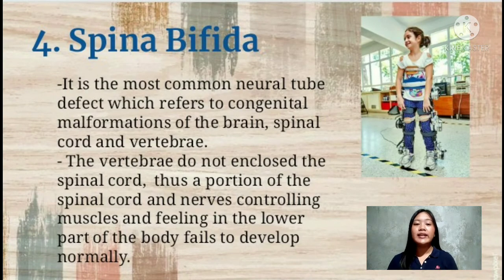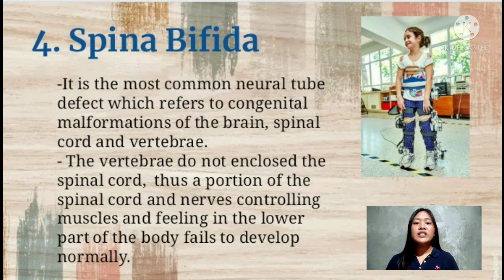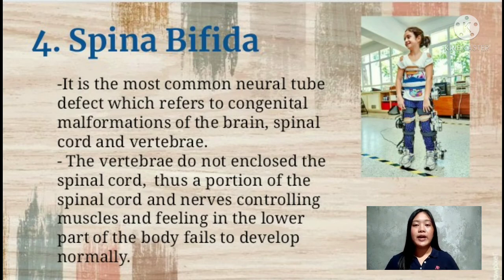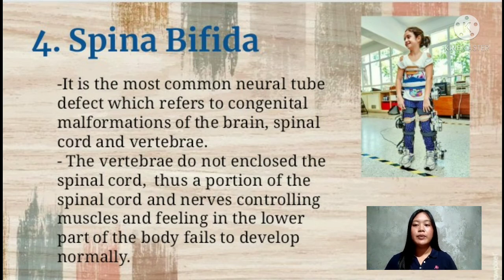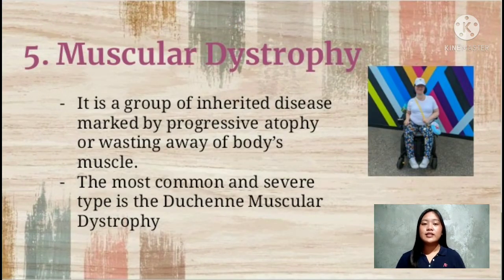Now let's move to spina bifida. Spina bifida is the most common neural tube defect, which refers to congenital malformation of the brain, spinal cord, or vertebrae. The vertebrae do not enclose the spinal cord, and thus a portion of the spinal cord and nerves controlling muscles and feeling in the lower part of the body fails to develop normally.